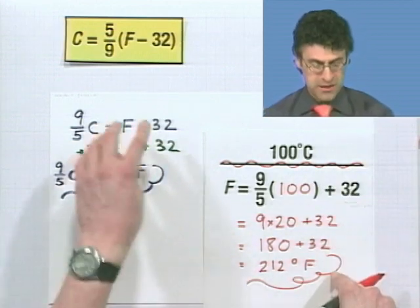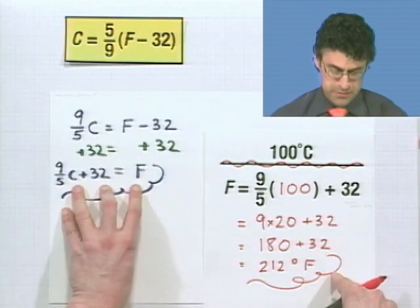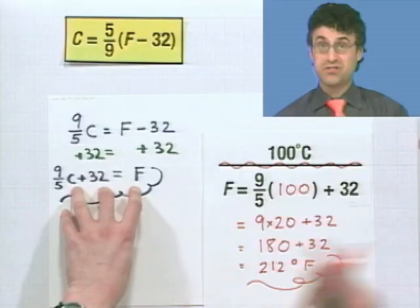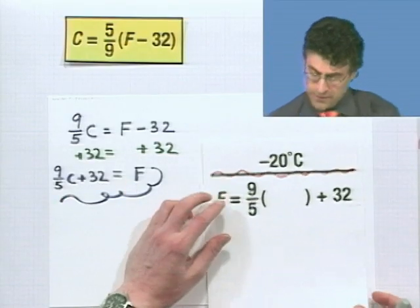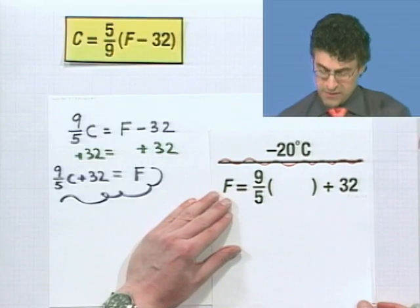So 100 degrees Celsius is equal to 212 degrees Fahrenheit. We made that conversion by taking a look at this particular formula, which gives us those two variables and their connection, and plugged in one variable, one quantity for one variable, and saw what was left for the other.